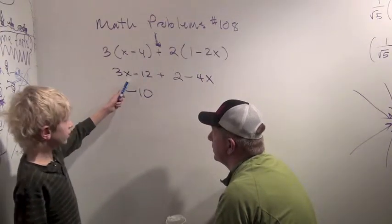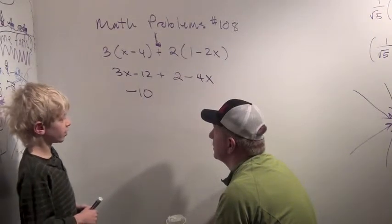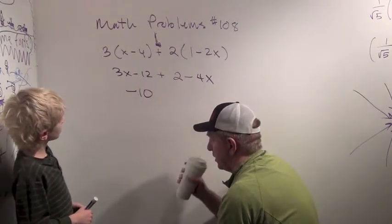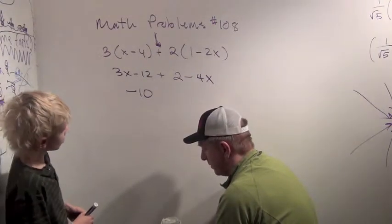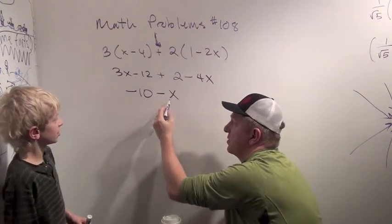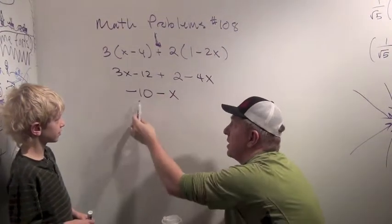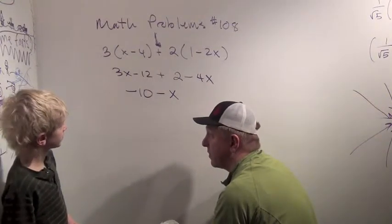Alright. And this is three x minus four x. That's minus one x. Okay. And most of the time we don't write the ones when it's just an x. We'll just write that as minus x. Yep. So we get minus ten minus x.